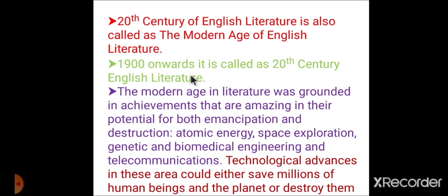The modern age in English literature was grounded in achievements that are amazing in their potential for both emancipation and destruction. These modern times achievements include atomic energy, space exploration, genetic and biomedical engineering, and telecommunication. Technological advances in this area could either save millions of human beings and the planet, or destroy them.